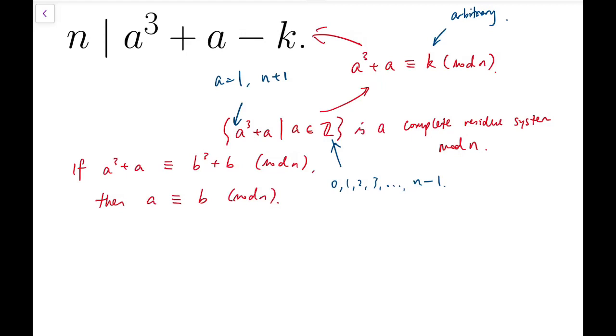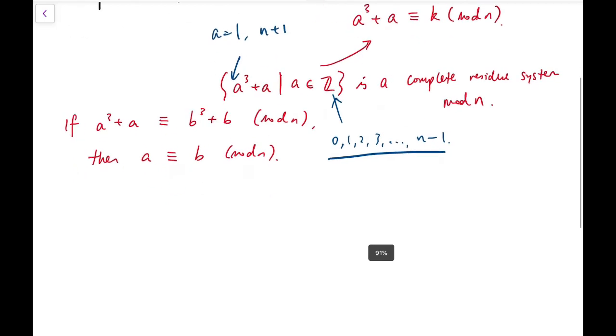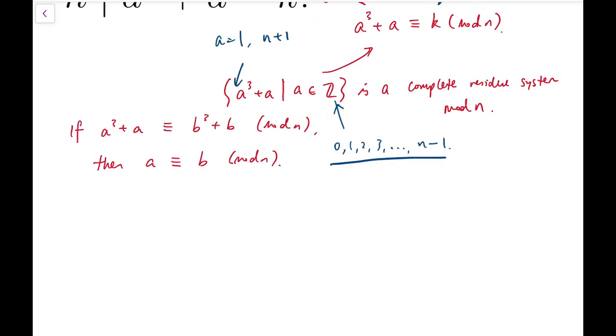And just consider those n values, and if we say that it's a complete residue system mod n, then these n entries should be distinct. They should not overlap when we do mod n. So I can claim this statement is that if two of them are congruent mod n, then actually the original term, the so-called pre-image, a and b should be congruent mod n as well.